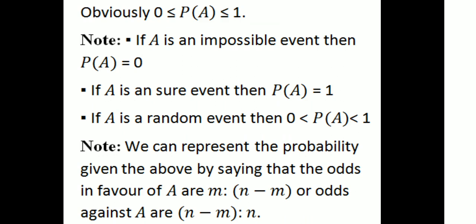Obviously, 0 ≤ P(A) ≤ 1. If A is an impossible event, the probability of A equals 0; if A is a certain event, P(A) equals 1. If A is a random event, then 0 < P(A) < 1. We can also represent the probability by saying the odds in favor of A are M to (N − M), or the odds against A are (N − M) to M.